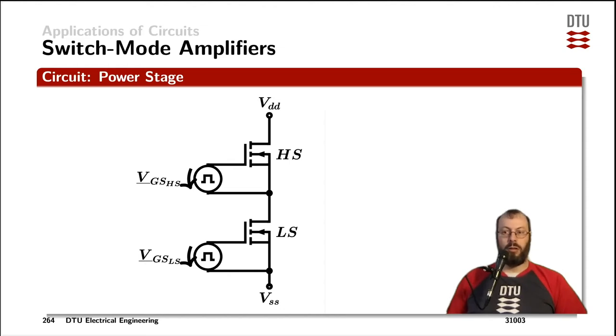Switch mode operation means that we are applying pulses as the gate source voltage for the high side device and the same for the low side device. So the high side power MOSFET is connected with its drain to the positive supply rail, its source is a common node with the drain of the low side MOSFET and the source of the low side MOSFET is connected to the negative supply rail.